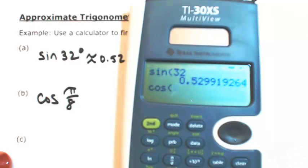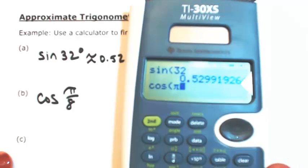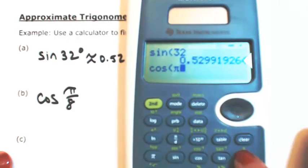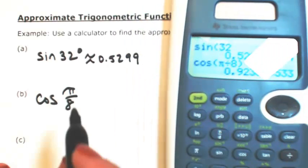Okay, so then look for cosine. And then your pi symbol is somewhere—in my case, it's right near the top. So pi divided by 8. It's about 0.9239.